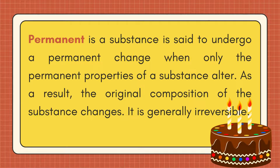What is a permanent change? A substance is said to undergo a permanent change when the permanent properties of a substance alter. As a result, the original composition of the substance changes. It is generally irreversible.